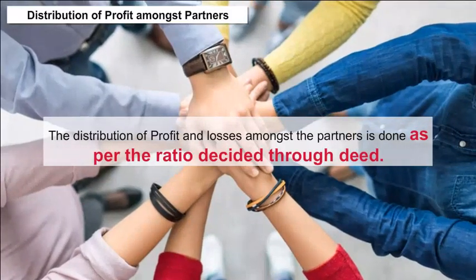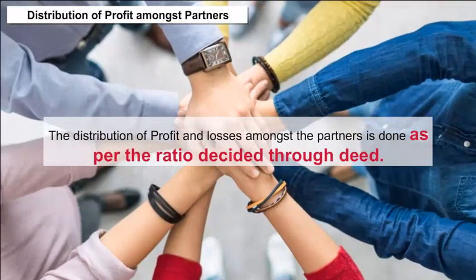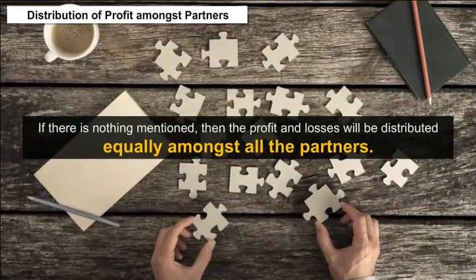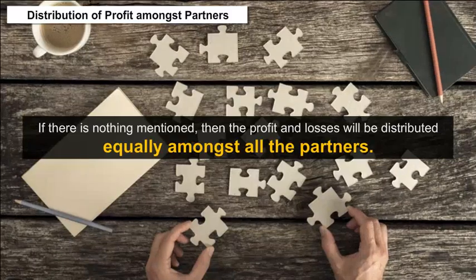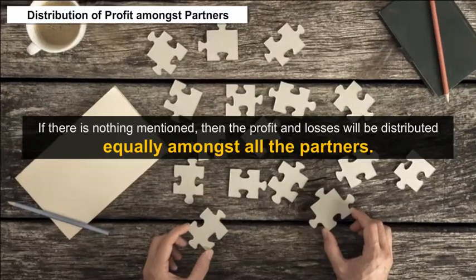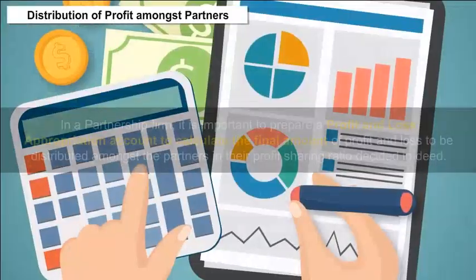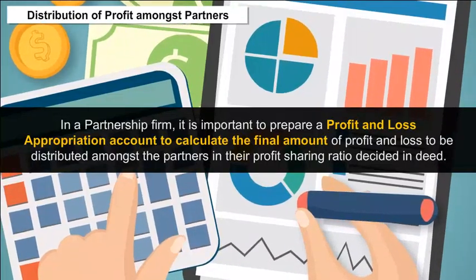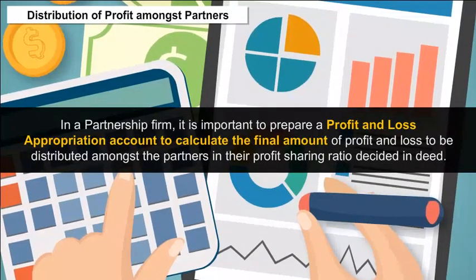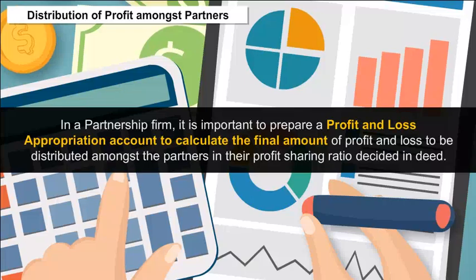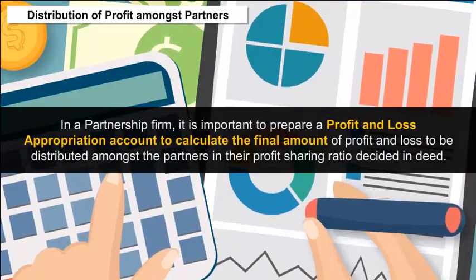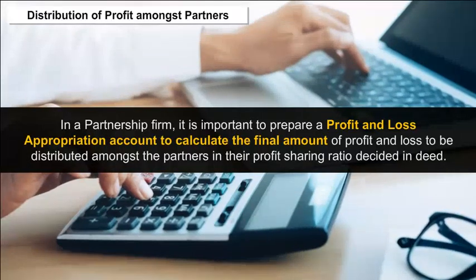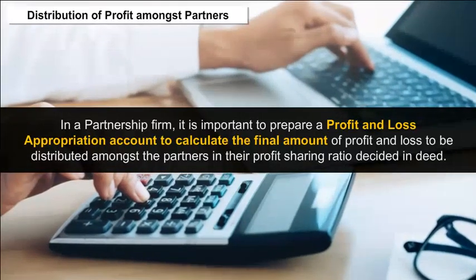Distribution of Profit Amongst Partners: Distribution of profits and losses amongst the partners is done as per the ratio decided through the deed. If there is nothing mentioned, the profit and losses will be distributed equally amongst all the partners. In a partnership firm, it is important to prepare a profit and loss appropriation account to calculate the final amount of profit and loss to be distributed amongst the partners in their profit sharing ratio as decided in the deed.